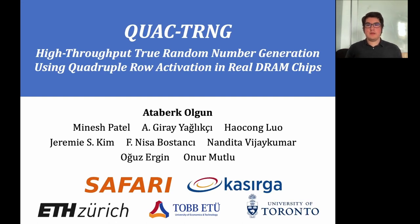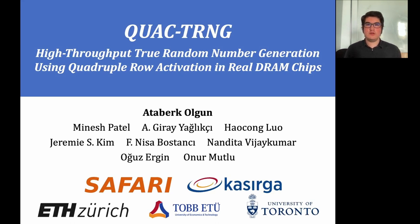Hello, I'm Atavak, and today I'll talk about QuadTRNG: high-throughput true random number generation using quadruple activation in real DRAM chips. This work was done by researchers from ETS3A, Tobi University of Economics and Technology, and University of Toronto.